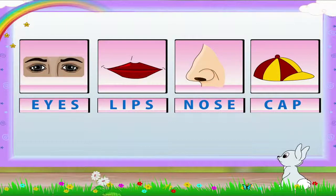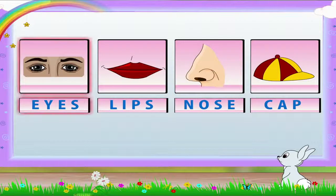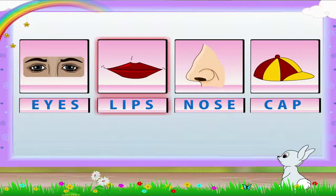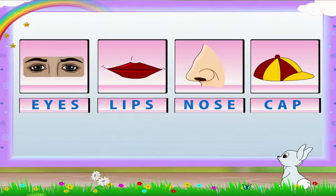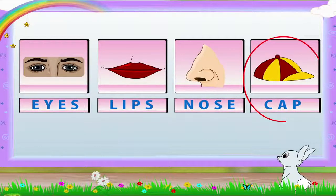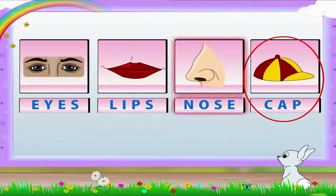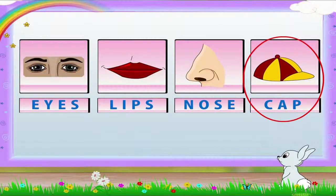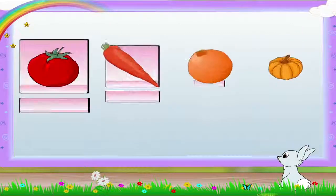In this first group: eyes, lips, nose, and cap. Which is the odd man out? Yes, it is cap! Eyes, lips, and nose are parts of the body, and cap is what we wear.